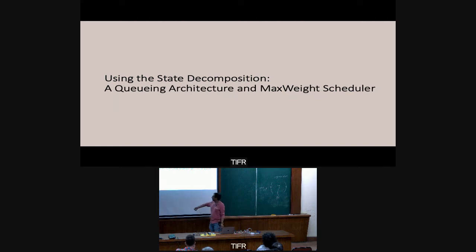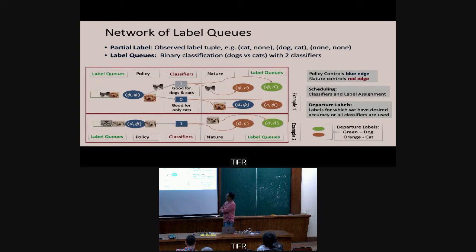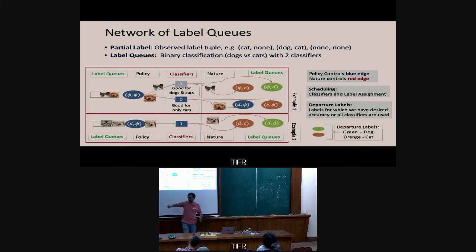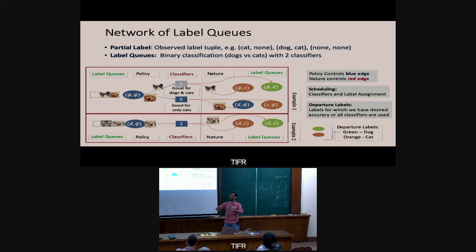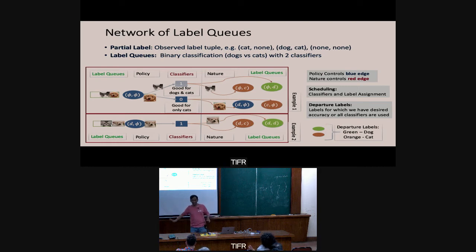Using the state decomposition, let's come up with an assignment method. For a toy with two types of objects — cat or dog — and two classifiers, state is represented as: null-null (no labels yet), cat-null, dog-null, null-cat, null-dog, cat-cat, cat-dog, dog-cat, dog-dog. So there are nine different counters. At any point I have a nine-dimensional vector with counts in each state saying how many images are there.